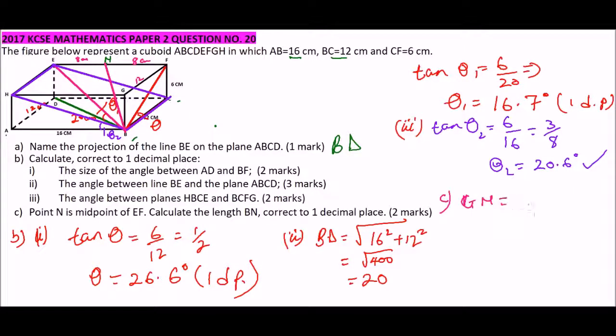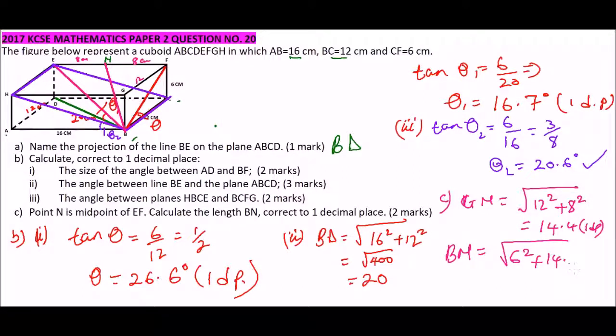And say GN is equals to the square root of 12 squared plus 8 squared. And this should give you 14.4 to 1 decimal place. Now we can get BN since we have found GN. BN, we can get it is the square root of GN squared and GB squared. So this means that BN is equals to the square root of 6 squared plus 14.4 squared. And that should give you 15.6, and this is to one decimal place. So that's how you work out that question. And you earn yourself 10 marks. So thank you for watching.